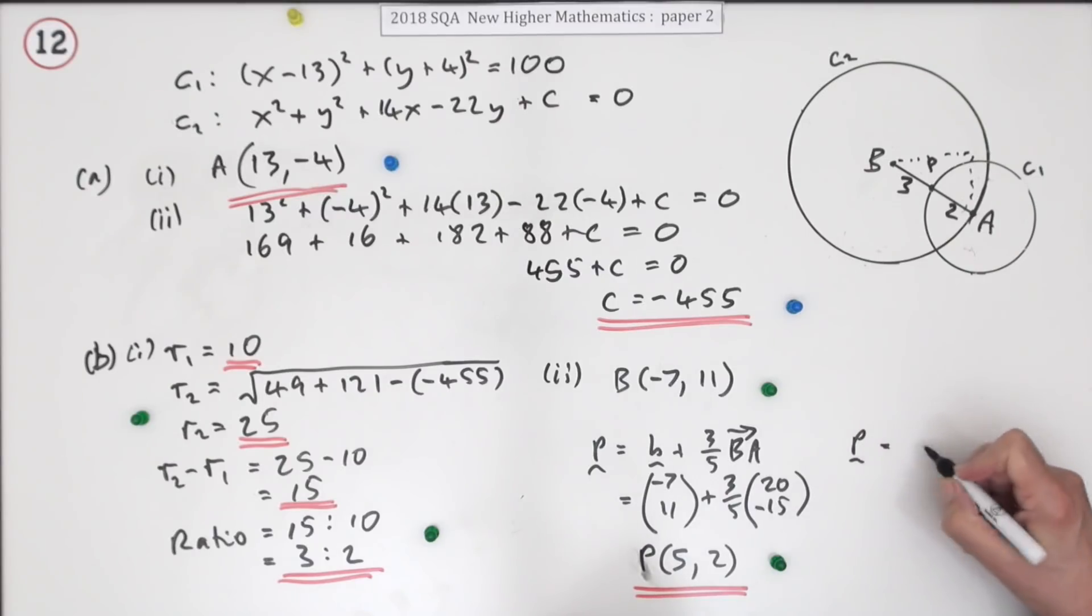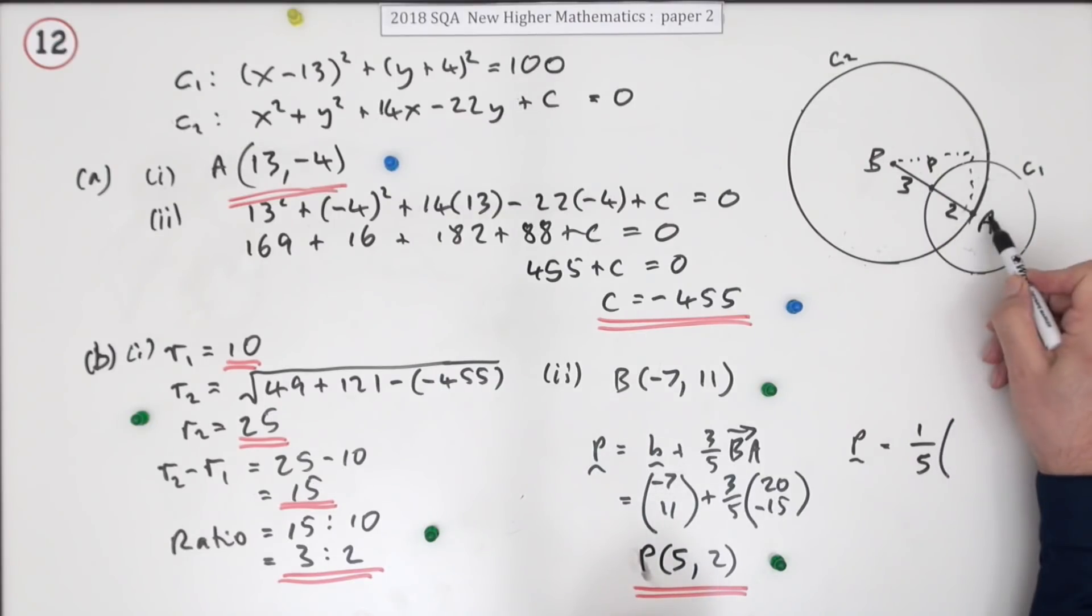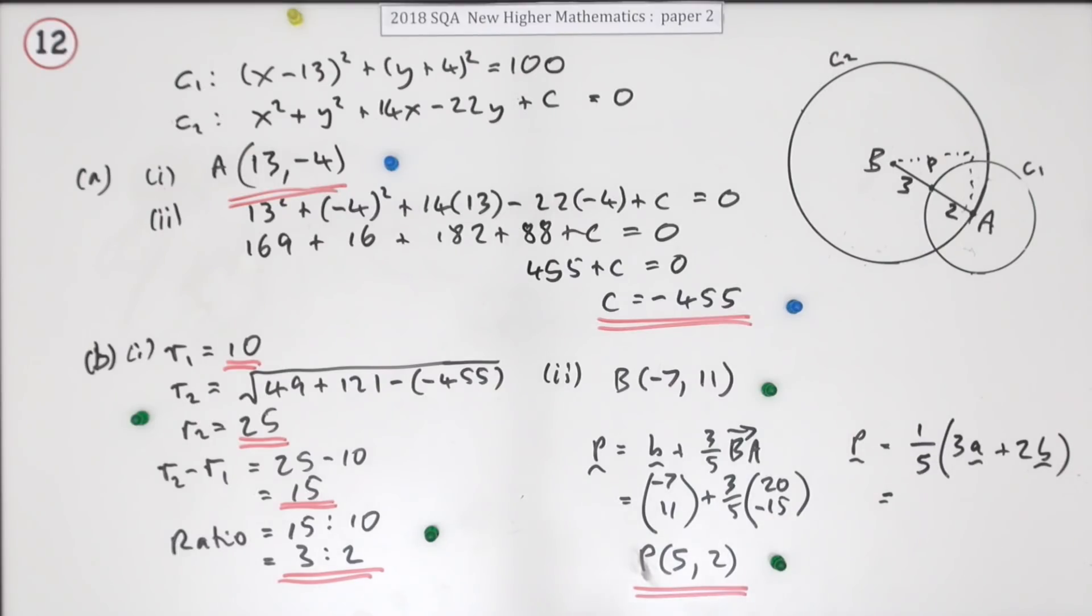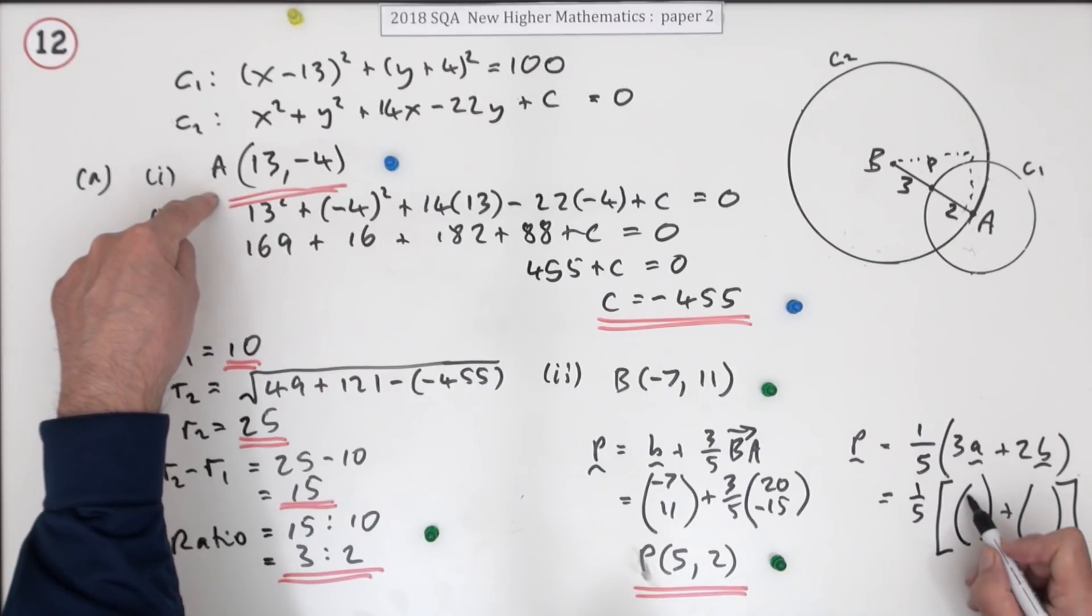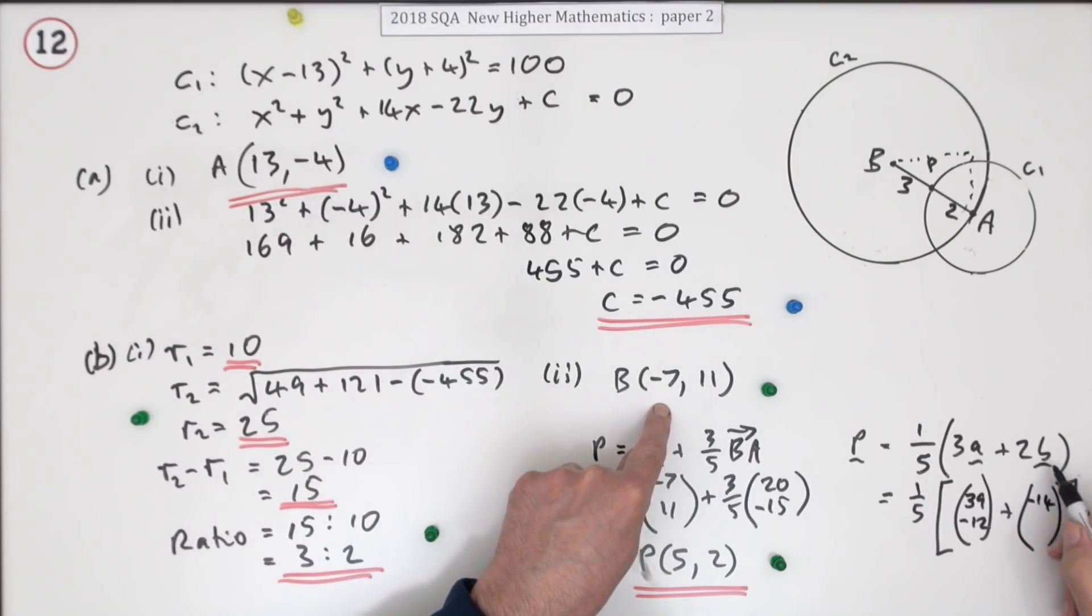If you wanted to write that as a section formula, it's one over the sum of the two parts, that's 5, times three of the A and two of the B. So a fifth of 3A plus 2B. A was (13, -4), so that's 39, -12. B was (-7, 11), so that's -14 and 22. That adds up to 25, divided by 5 is 5, and 10 divided by 5 is 2. Same answer.